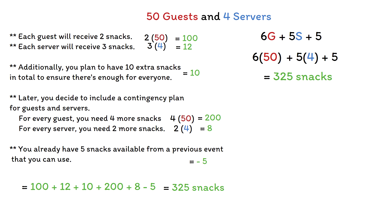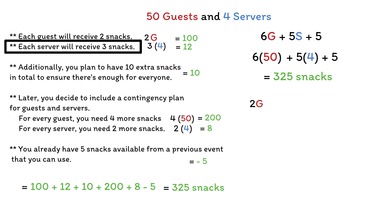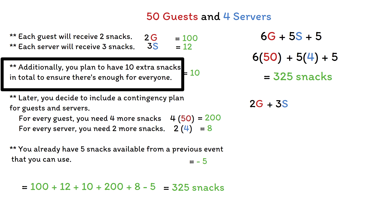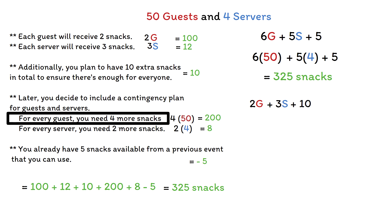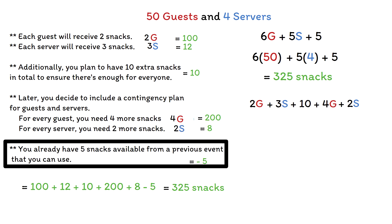Let's look at how we got this expression. Each guest will receive 2 snacks — that is the same as 2g, just replacing the 50 with g. Each server will receive 3 snacks — that is 3s, replacing the 4 with s. There is an additional 10 snacks not dependent on servers or guests, so it's a constant: plus 10. For the contingency plan, every guest needs 4 snacks — that is 4g, again replacing 50 with g. Every server needs 2 more snacks — that is 2s, replacing the 4 with s. You already have 5 snacks, so you subtract 5 from the total you need to make.